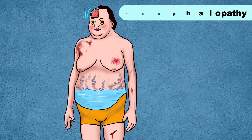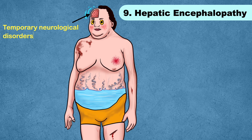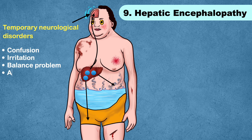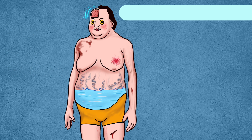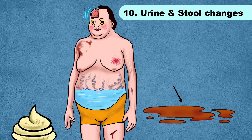However, multiple spider angiomas are characteristic of chronic liver disease with a specificity of 95 percent. Another sign is hepatic encephalopathy — a temporary neurological disorder that occurs when the liver doesn't work properly. Toxins build up in the blood, travel to the brain, and affect brain function. People with hepatic encephalopathy may seem confused and irritated, with balance problems and altered personality.